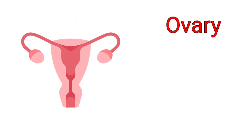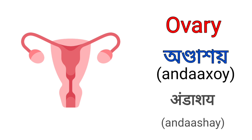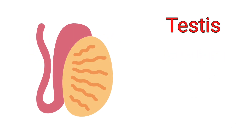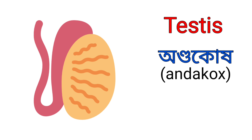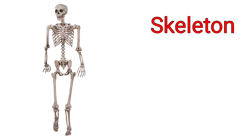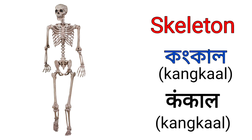Ovary. It's called Ondakhoi in Assamese and it's called Andasai in Hindi. Testis. It's called Ondakhoi in Assamese and it's called Brison in Hindi. Skeleton. It's called Konkal in Assamese and it's called Konkal in Hindi.